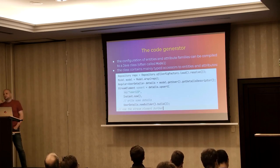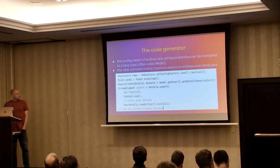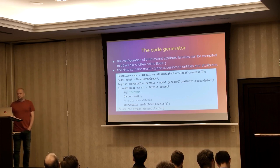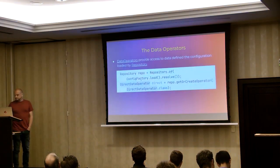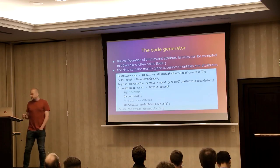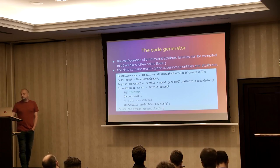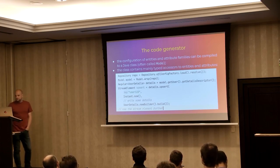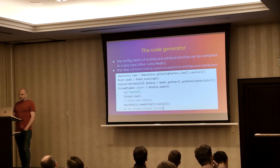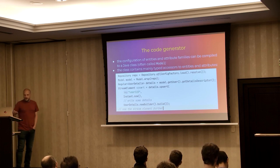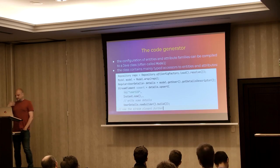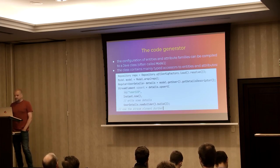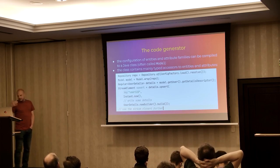If we compile this configuration — which essentially defines the data model and attribute families in a configuration file — we can insert it into a code generator which will generate a Java class often called a model. This class contains typed information about the entities and attributes: it knows we have a 'user', it knows the user has 'details', and it knows the type of the attribute's value. We can then create a stream element — here called an upsert — that inserts or rewrites the data stored for user '123' at a given timestamp with some value.